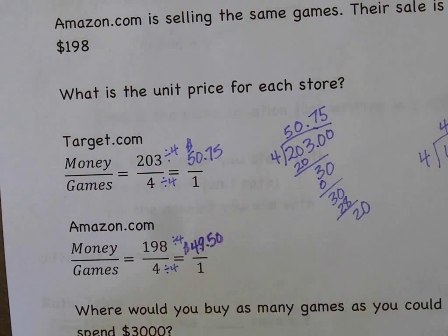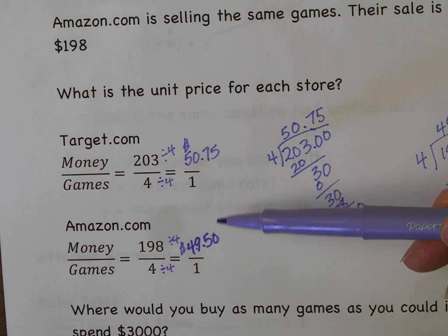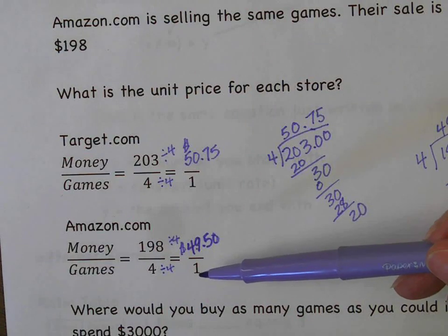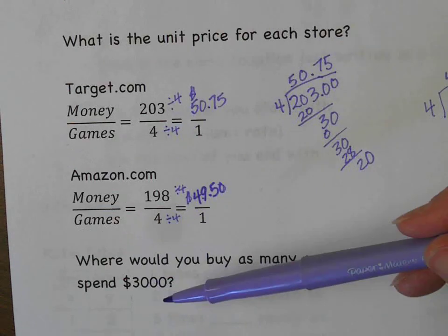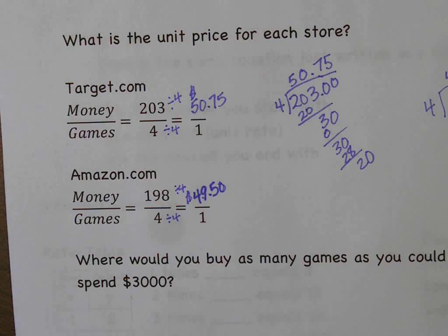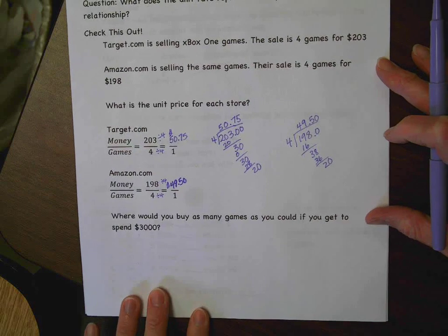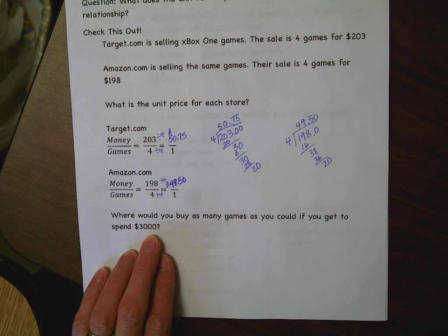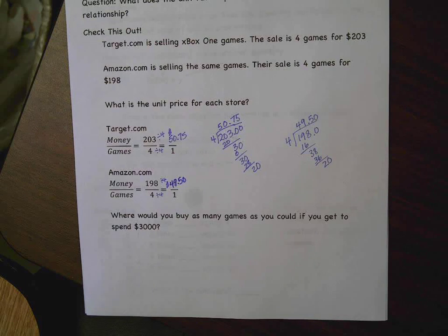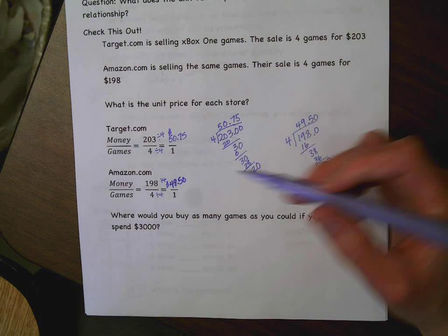So my question is: which store would you rather buy from — $50.75 or $49.50? If you look at it, it's another 50 cents and you'd be at $50, then 75 cents more — so maybe about $1.25 more per game at Target. Then the question is, using your unit price, you've got to determine — let me zoom out so you can see it — where would you buy as many games as you could if you could spend $3,000? You've got to figure out which one gives you the better deal.